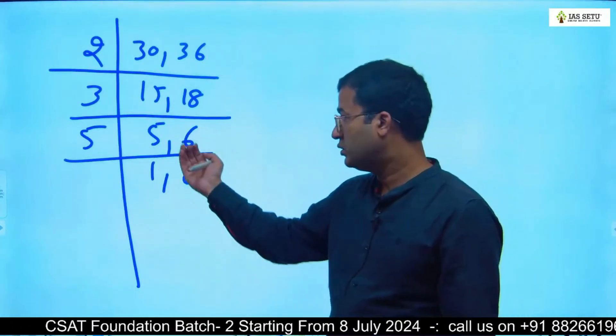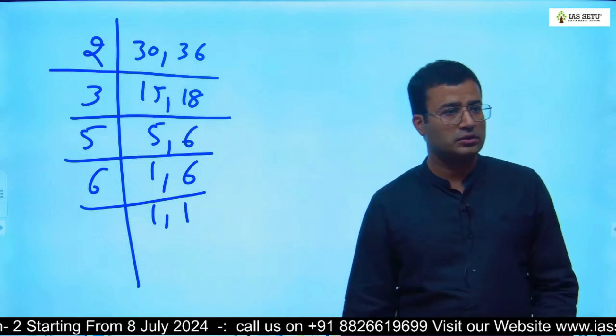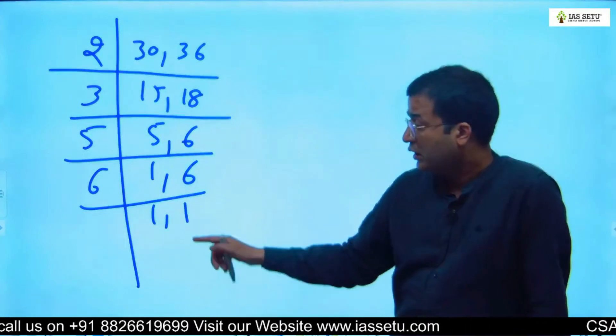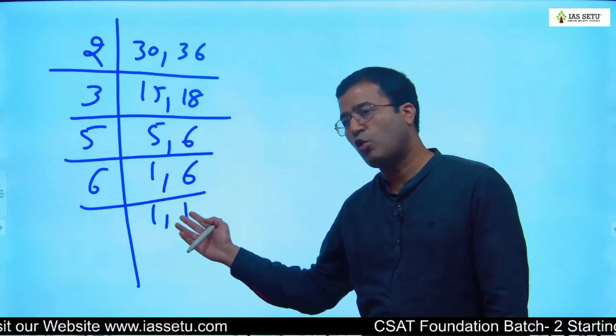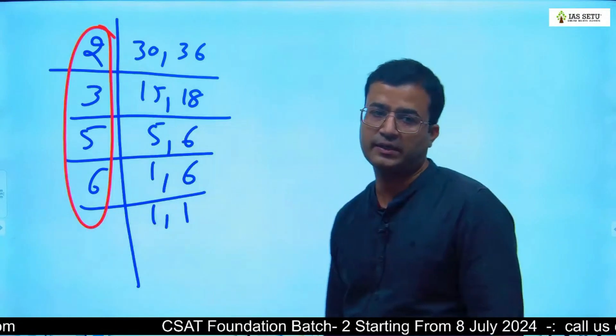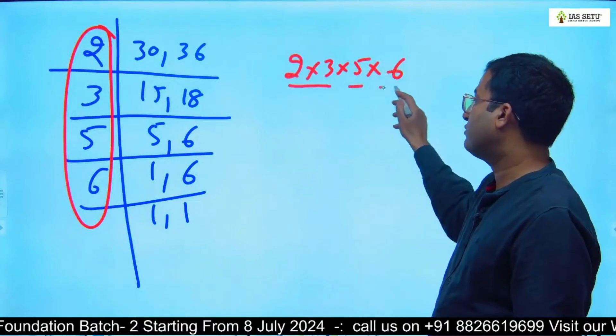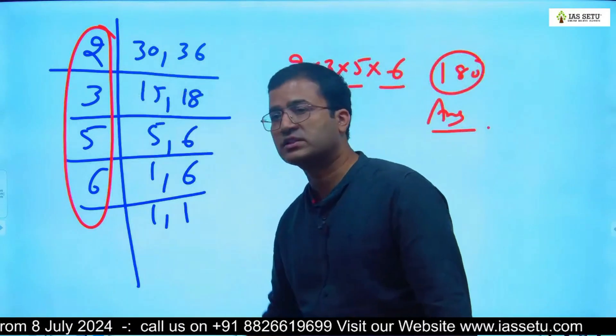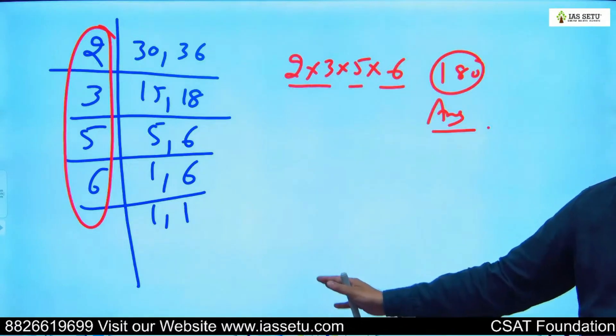Don't write 6. You have to make all numbers 1. You might recall your teacher wouldn't be satisfied until all numbers become 1. It's a basic process. We have to make all numbers 1. After that, multiply these numbers. That is 2 × 3 × 5 = 30, 30 × 6 = 180. So what is LCM of 30 and 36? 180. Don't do mistakes.